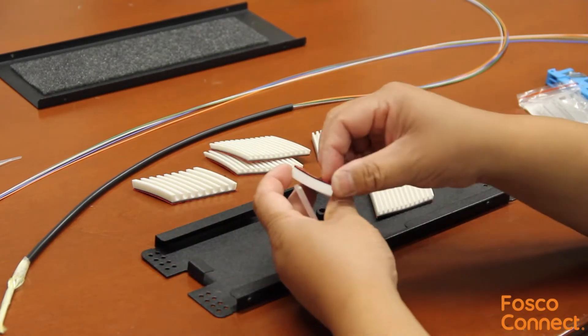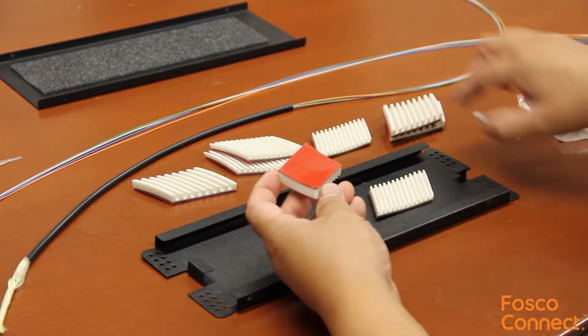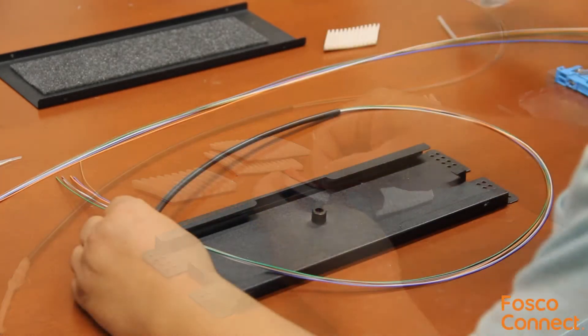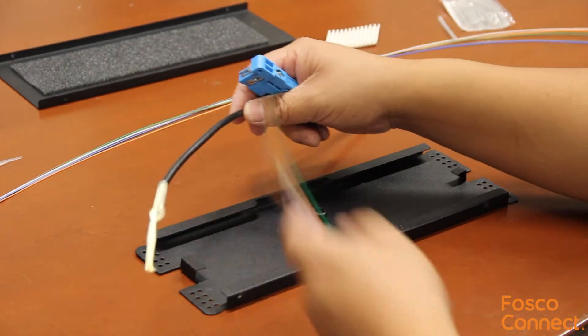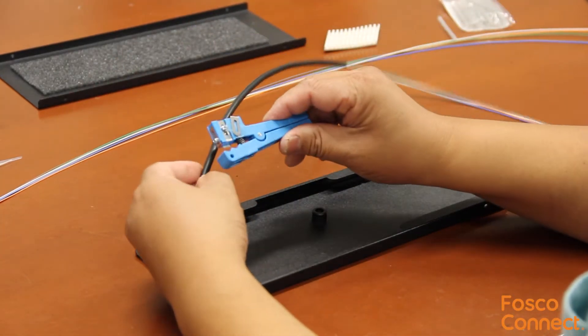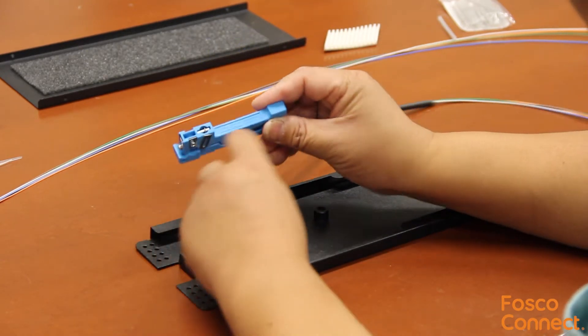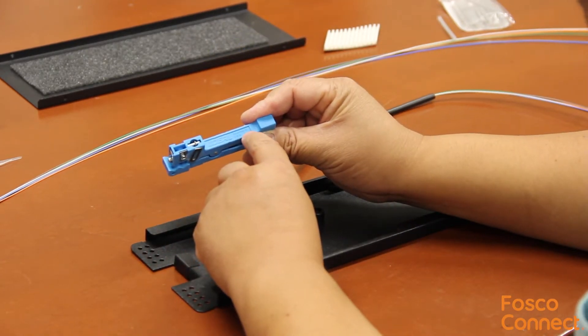You can peel off the red tape to expose the adhesive to stick the holders in the tray. The first step is to remove the buffer tubes. Expose at least 36 inches to 48 inches of the fibers. We use this buffer tube stripper to remove the buffer tubes.